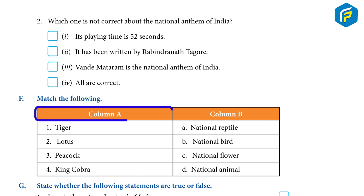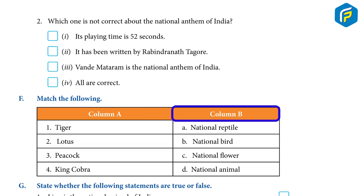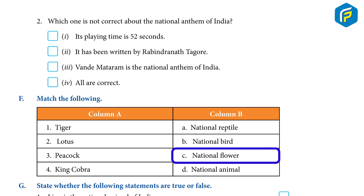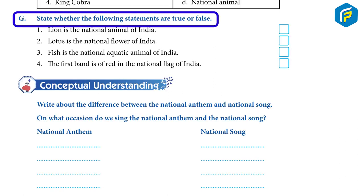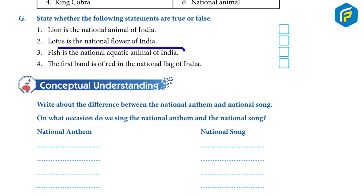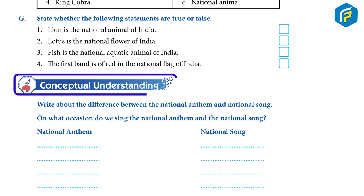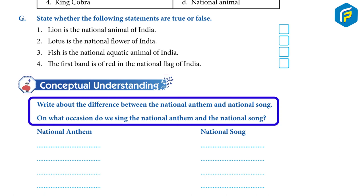Match the Following — Column A: 1. Tiger, 2. Lotus, 3. Peacock, 4. King Cobra. Column B: A. National Reptile, B. National Bird, C. National Flower, D. National Animal. True or False: 1. Lion is the national animal of India. 2. Lotus is the national flower of India. 3. Fish is the national aquatic animal of India. 4. The first band is red in the national flag of India. Conceptual Understanding: Write about the difference between the national anthem and national song. On what occasion do we sing the national anthem and national song?